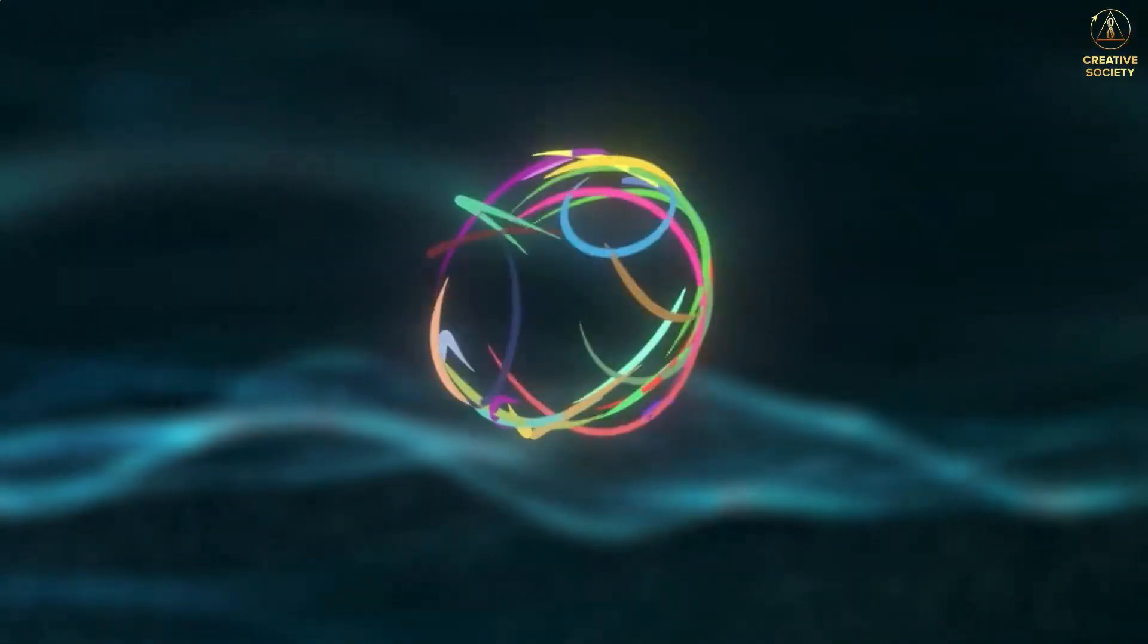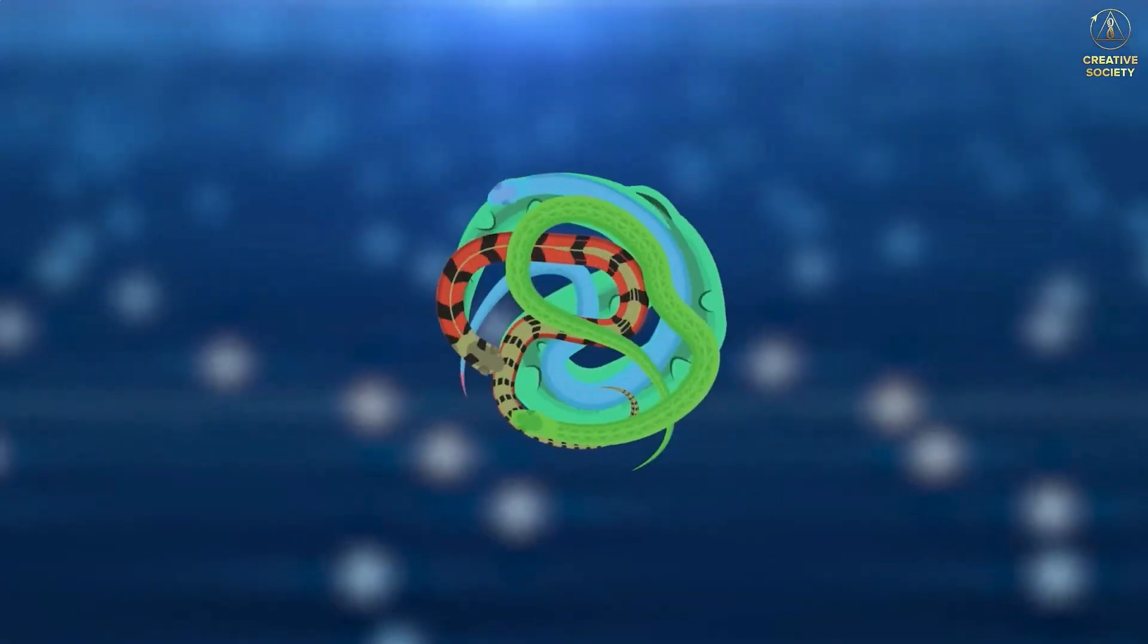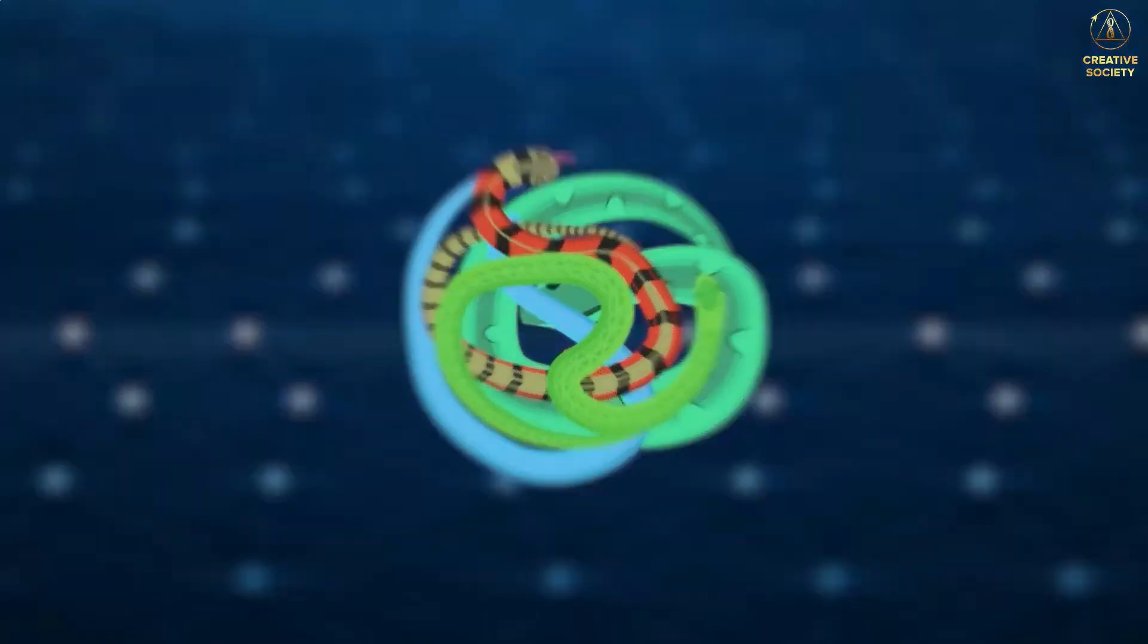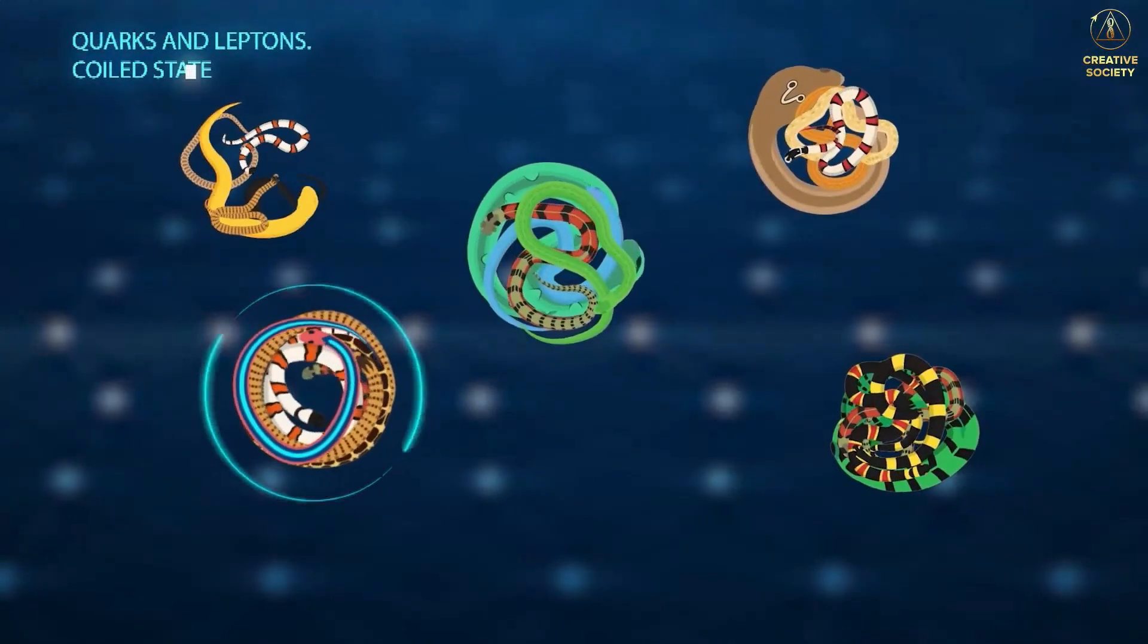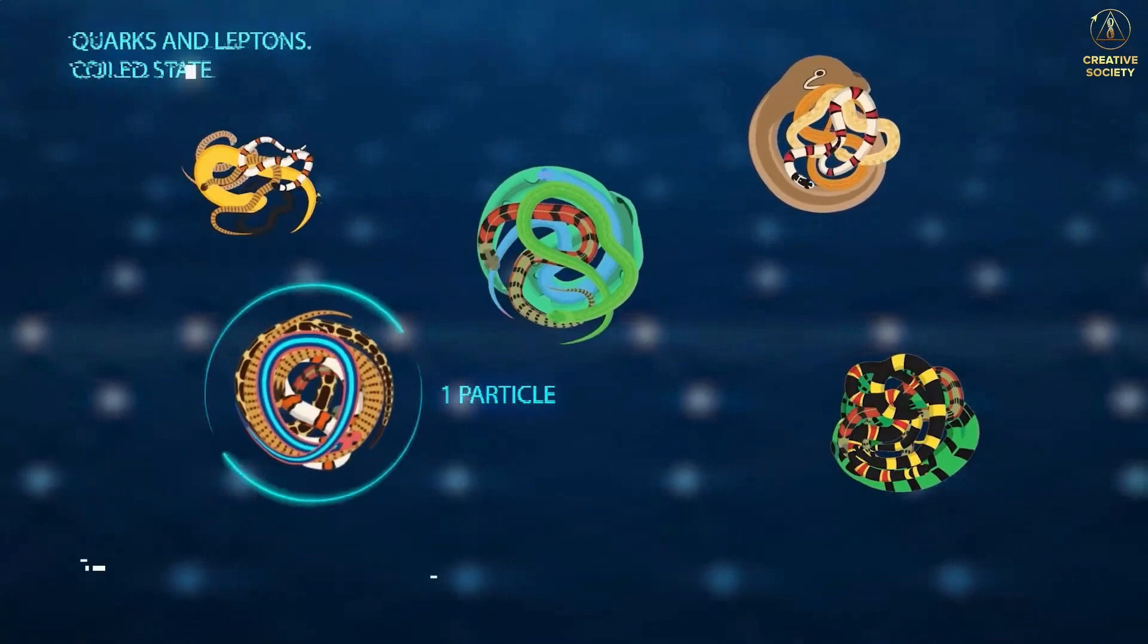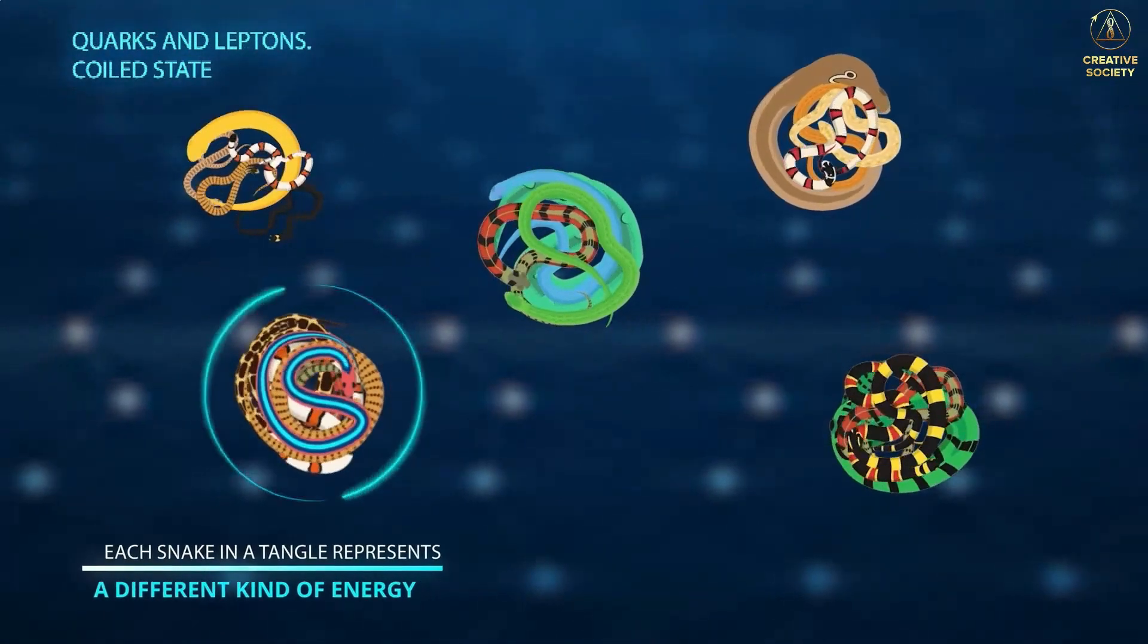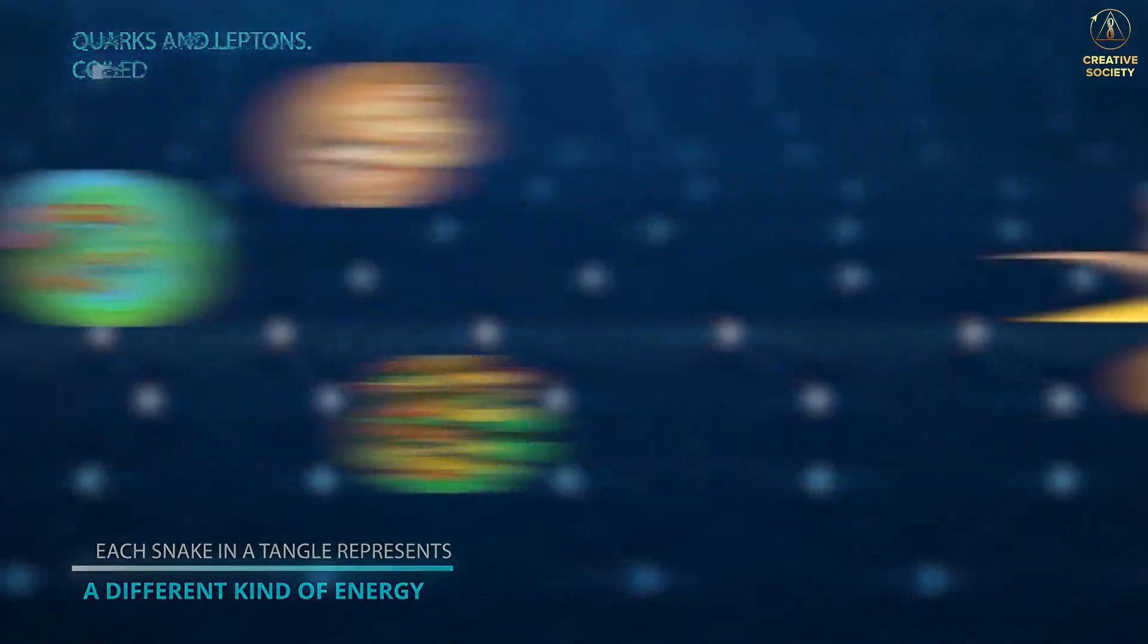What is it? Associatively, it can be compared to a tangle of snakes intertwined with each other. Each tangle is the smallest particle, a quark or a lepton, while each snake in a tangle represents a different kind of energy.